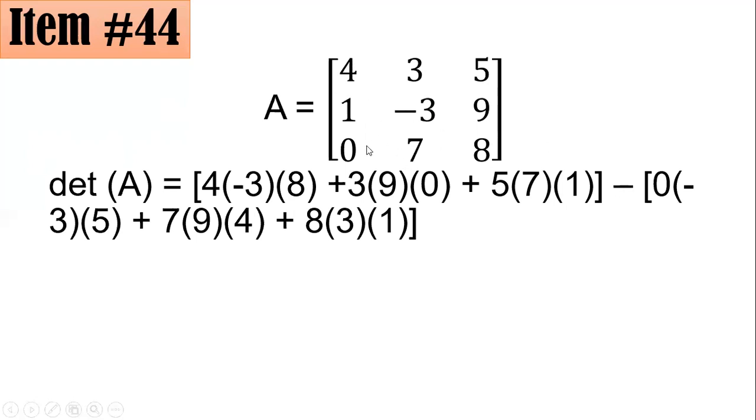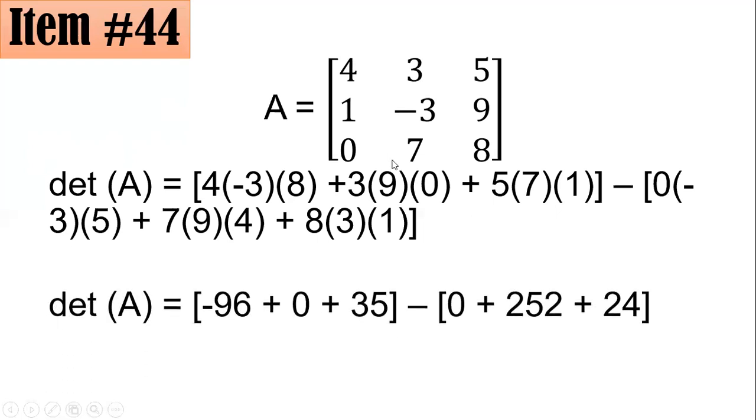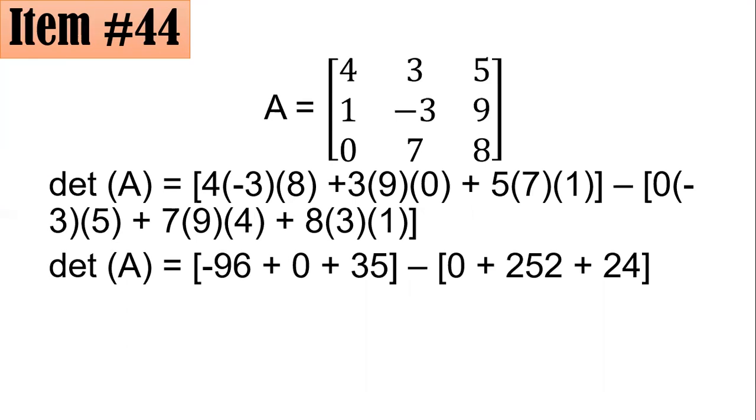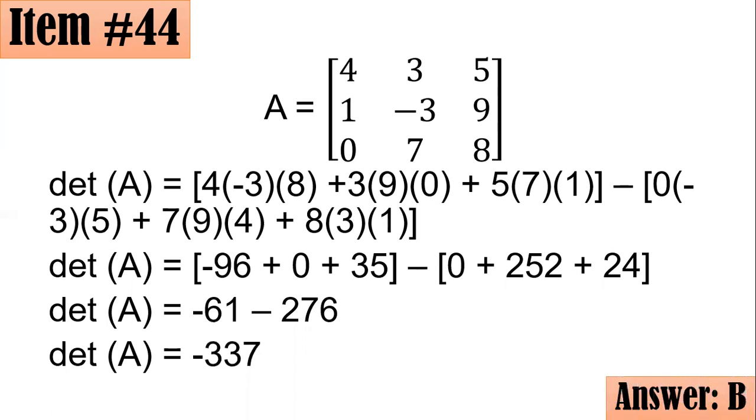And you will subtract it with the product going from bottom left to upper right. So 0 times negative 3 times 5, next 7 times 9 times 4, and lastly plus 8 times 3 times 1. If you simplify that, it becomes negative 96 plus 0 plus 35 subtracted by the sum of 0, 252, and 24. That becomes negative 61 minus 276 or negative 337, letter B.